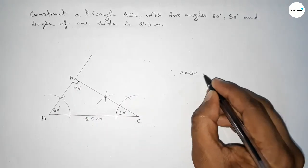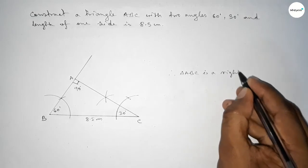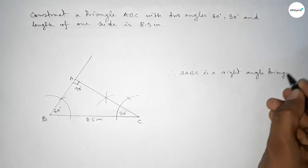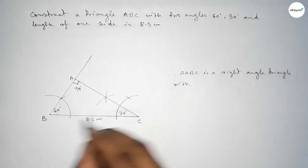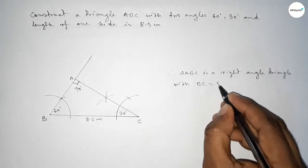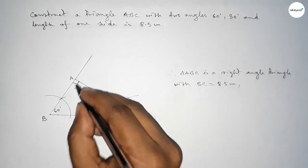So therefore triangle ABC is a right angle triangle with given side BC equal to 8.5 centimeters, angle ABC equal to 60 degrees, angle ACB equal to 30 degrees, and angle BAC equal to 90 degrees.